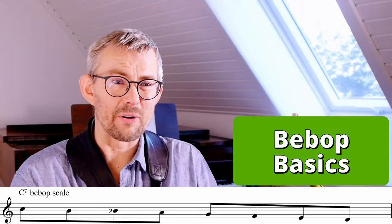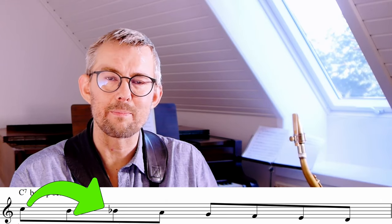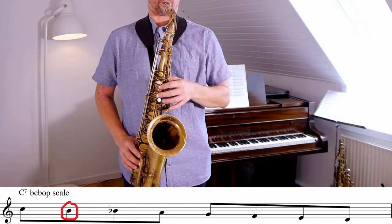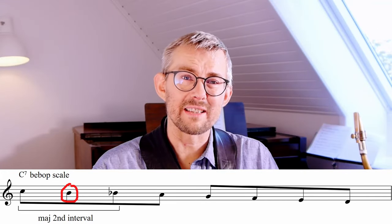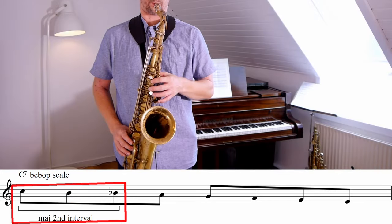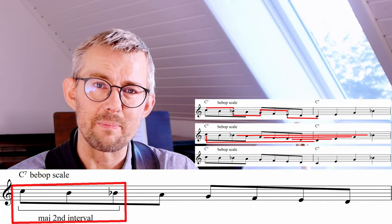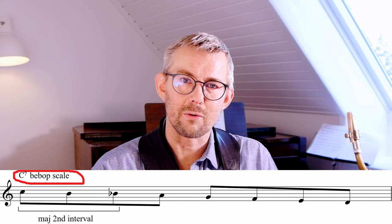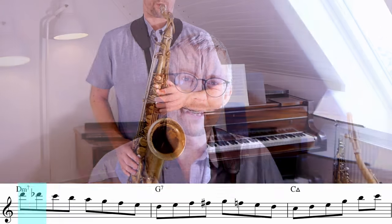Let's dig deeper. The basic C7 bebop scale connects the C and the Bb with the B, the chromatic passing tone. The interval it connects over is a major second. We know the result of this — getting the wanted target notes on the right beats. The bebop scale is mostly played on dominant 7th chords, adding that bebop note between the root and the 7th degree.